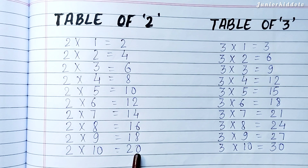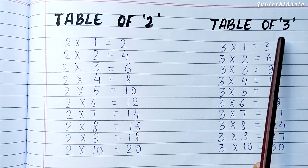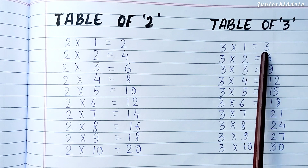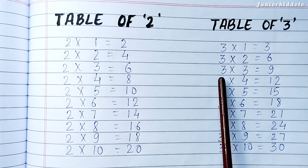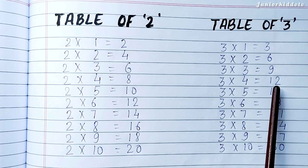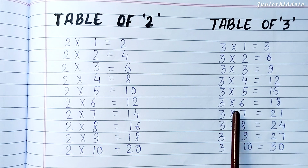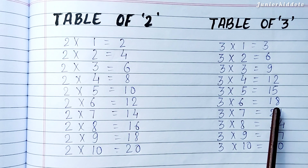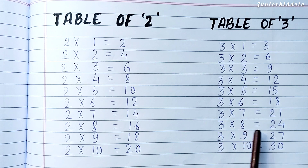Two Tens are Twenty. Table of Three. Three Ones are Three. Three Twos are Six. Three Threes are Nine. Three Fours are Twelve. Three Fives are Fifteen. Three Sixes are Eighteen. Three Sevens are Twenty One. Three Eights are Twenty Four.